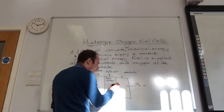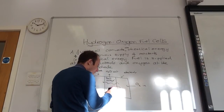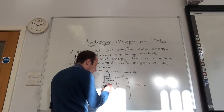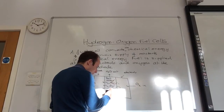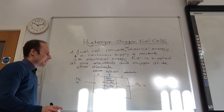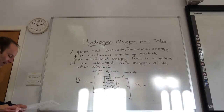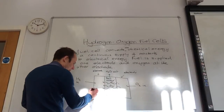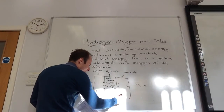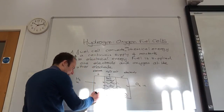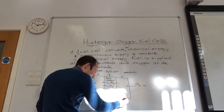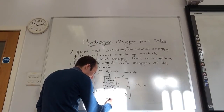This is the salt bridge. What happens is OH⁻ ions then diffuse across the salt bridge. They go from the oxygen end into the hydrogen end. That electrode is negative and that electrode is positive, and if we connect our circuit that gives us energy out.